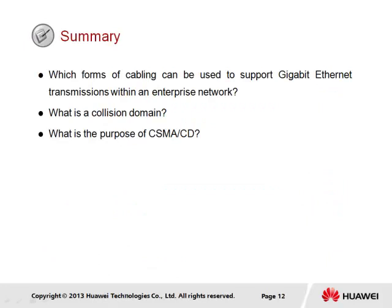In summary, which forms of cabling can support Gigabit Ethernet transmissions within an enterprise network? Ethernet twisted pair cables of Cat5e and greater, as well as fiber optic cables supporting the 1000Base standard or higher, can support transmission rates in the Gigabit range. A collision domain is a physical segment of the network within which signals carrying data are transmitted. Shared collision domains can experience collisions from simultaneous transmissions by two end stations on the same medium. Isolated collision domains prevent collisions by dedicating signal transmission to different physical segments, as found in twisted pair cabling such as Ethernet Cat5 and Cat5e.